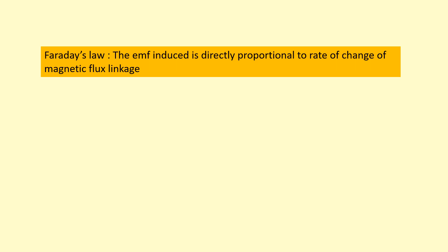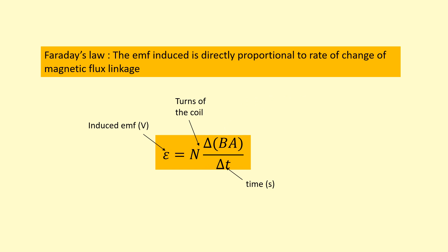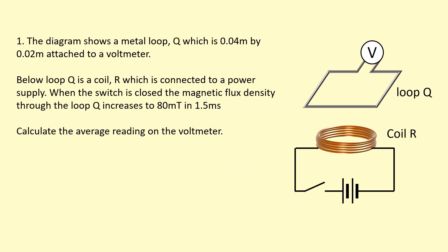Faraday's law tells us the EMF induced is directly proportional to the rate of change of magnetic flux linkage. It can be given as an equation where epsilon is the EMF induced in volts, N is the number of turns of the coil, delta phi represents the change in magnetic flux measured in webers, and delta t is the time for that change. The flux can also be written as magnetic flux density times area — B times A — where B is the magnetic flux density and A is the area in meters squared, which could be a circle, square, and so on.